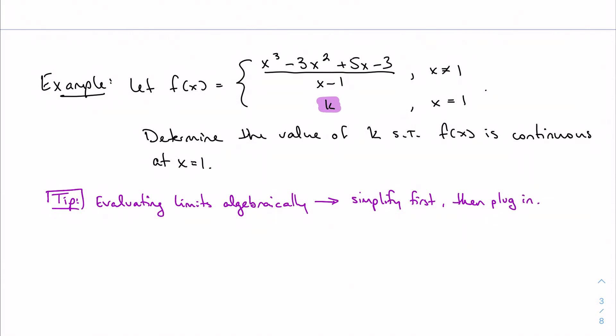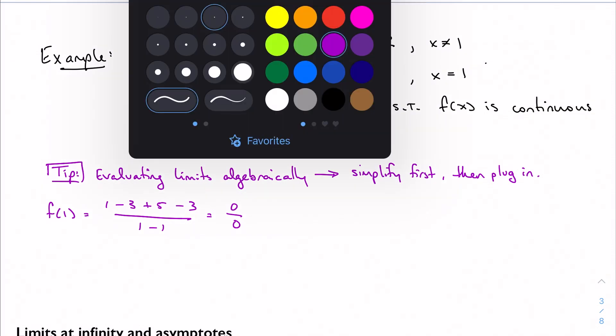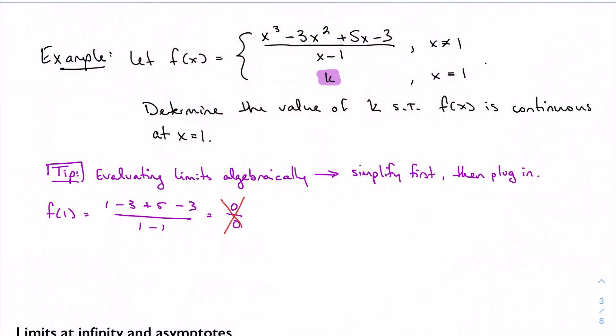I think we can try to do this first, because realistically, if I try to plug in 1 right now, I'm going to have a zero divided by zero situation here. If I plug in 1, f(1) is equal to some k, but if I look at the top, I got 1 - 3 + 5 - 3 over 1 - 1, and that's zero over zero. And we don't like that. We call that indeterminate. But we want to make sure this does work. Now, I just said we don't really like zero over zero, but for simplification, we do. Zero divided by zero usually tells us we can simplify more.